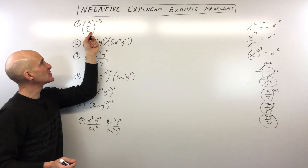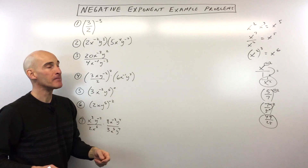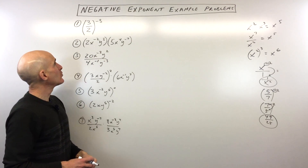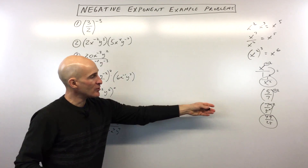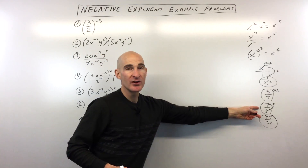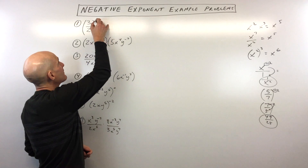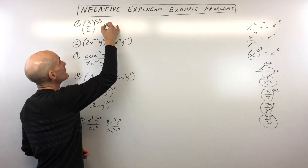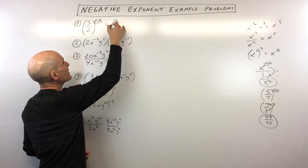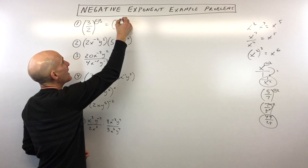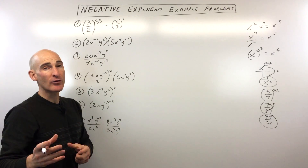You can see we've got 3 divided by 2 to the negative third power. So what do you think? How would you handle that one? Well, when you see that negative exponent, you can take the reciprocal of the base, so that's going to be 2 over 3, and now it's raised to the positive third power.